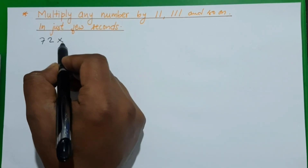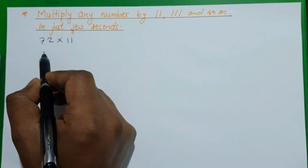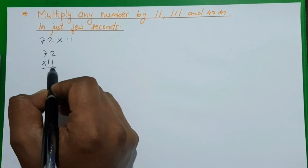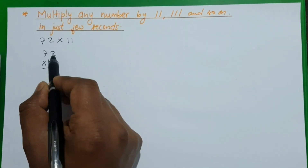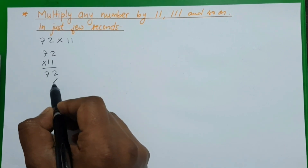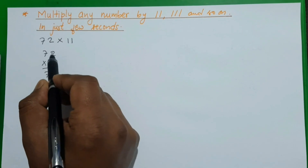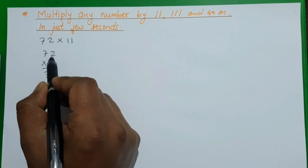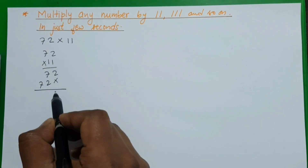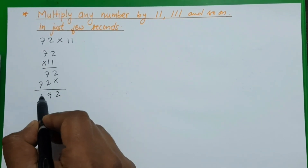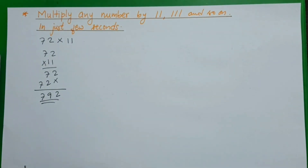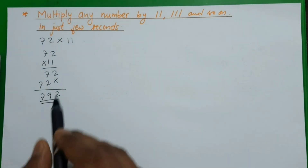First let's multiply 72 by 11 using the usual method. We do 72 × 11: multiply by the first 1 to get 72, then by the second 1 to get 720, and then we add the numbers. 7 plus 2 is 9, so the result is 792. This is our usual method of multiplication.